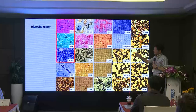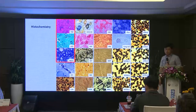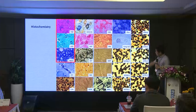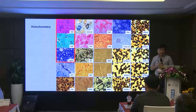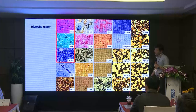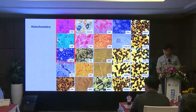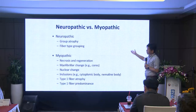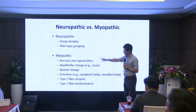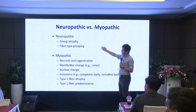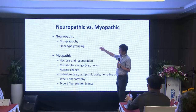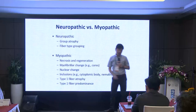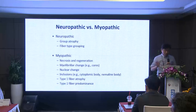The stains we routinely perform include H&E, modified Gomori trichrome, and NADH — the most important ones. Some people say that with H&E, modified Gomori trichrome, and NADH alone, more than 90% of muscle disease can be diagnosed. ATPase staining — more precisely myosin ATPase — is done to differentiate fiber type. After these analyses, we basically want to separate neuropathic conditions from myopathic conditions. There are only two definitive neuropathic findings: group atrophy and fiber type grouping. Basically all others are myopathic changes.